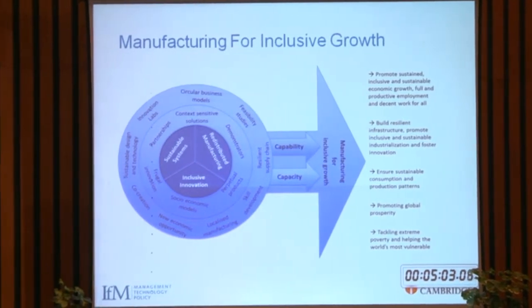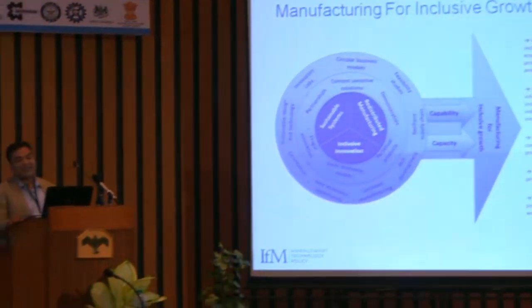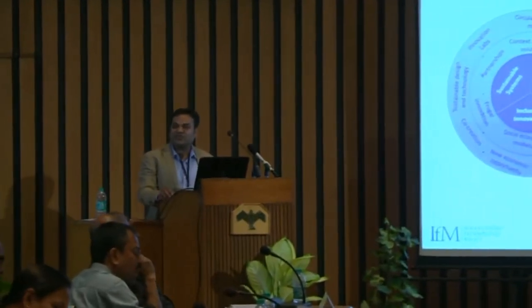The key objectives are: promoting global prosperity, thinking about sustainability, building resilient infrastructure, and tackling global poverty. This is the framework we are using to develop our thinking about what key outcomes each theme can contribute. If somebody thinks inclusive manufacturing is only an Indian challenge, I might disagree. It's a developed-world challenge — it's a global challenge. Every country is struggling in different forms.